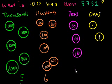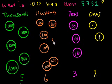3 tens, 30. 2 ones. So the result is 5,632. Let's do one more — but first I have to add that 100 back that I just took away.